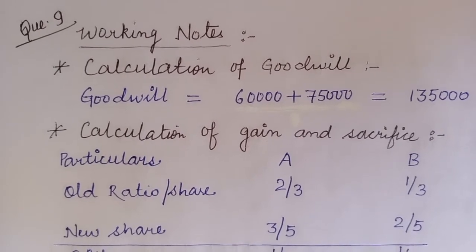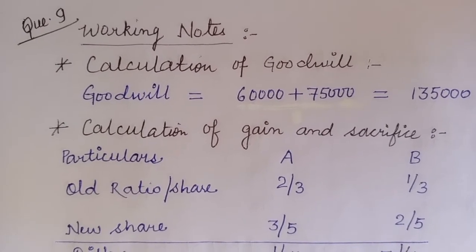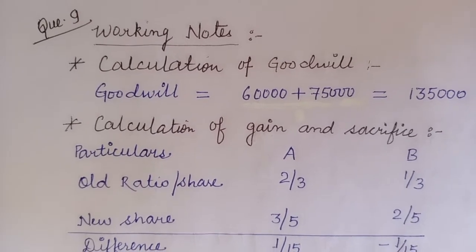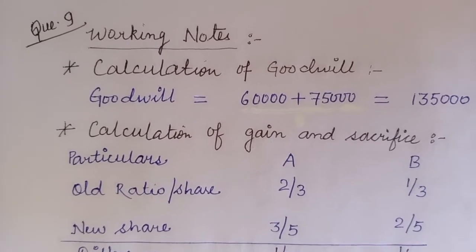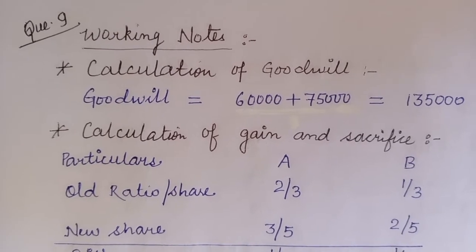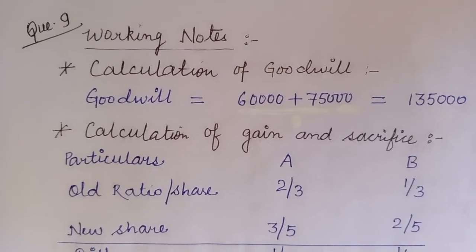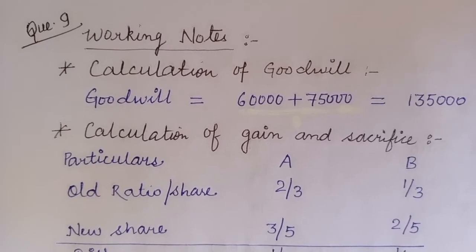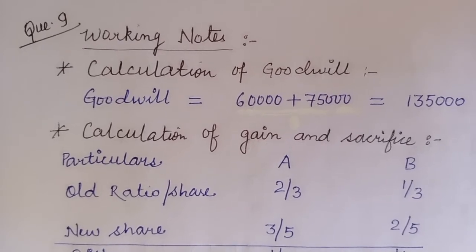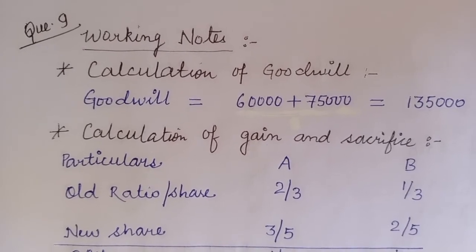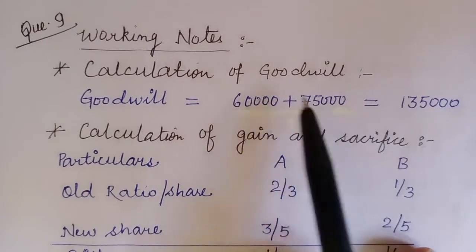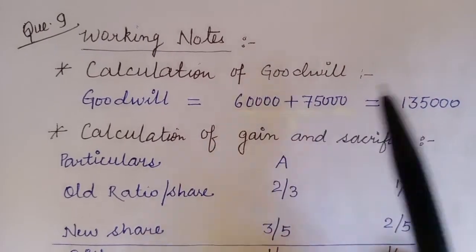The firm's goodwill is to be valued on the basis of the aggregate of two years' profits preceding the date the decision became effective. The profits for 2018 are ₹60,000 and ₹75,000. Since goodwill is based on two years' profits — not the average profit, but the total of two years' profits together — that gives the total goodwill value.